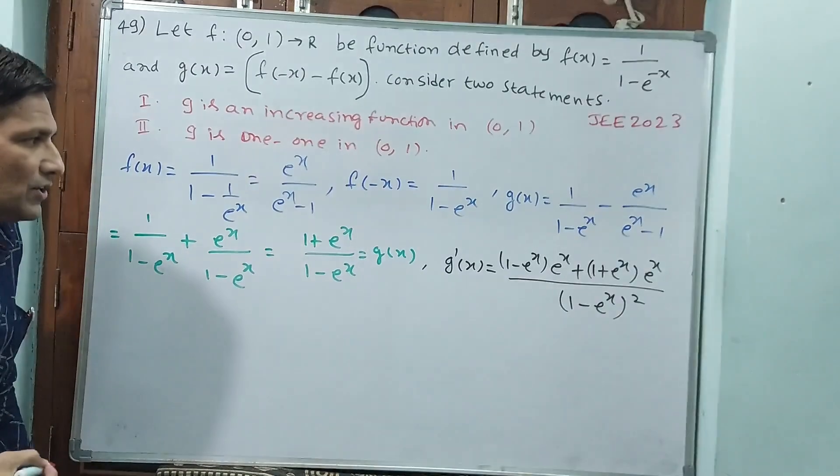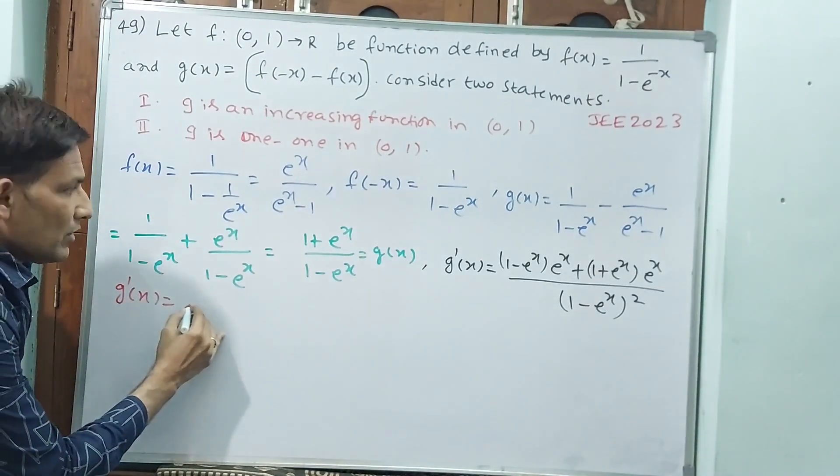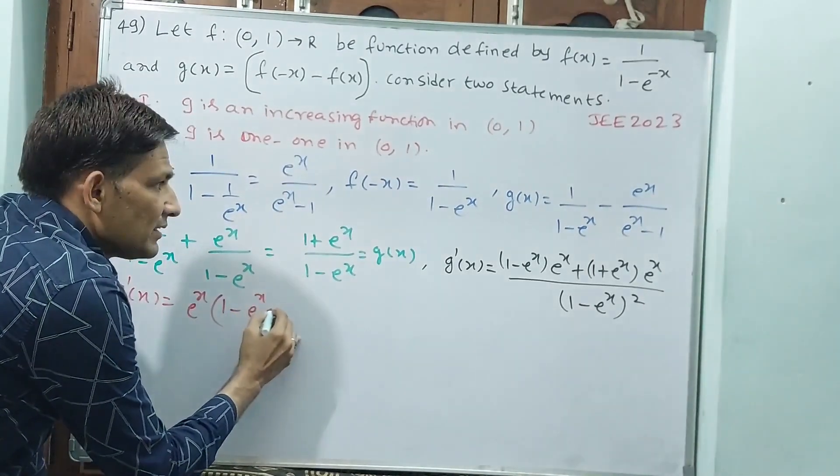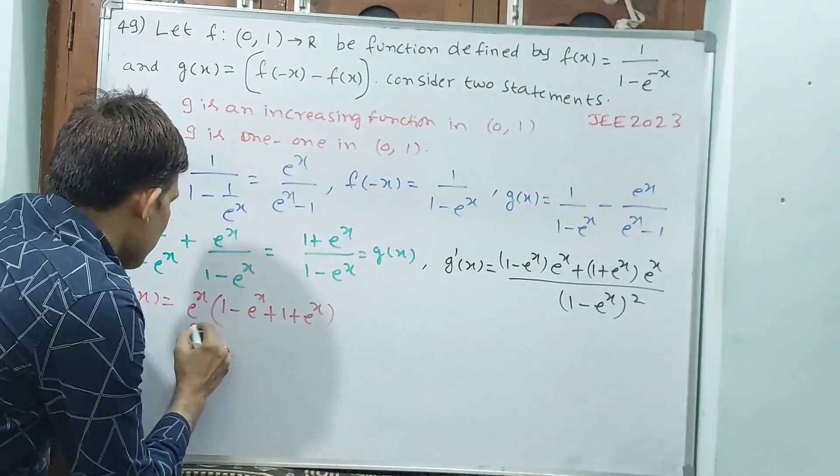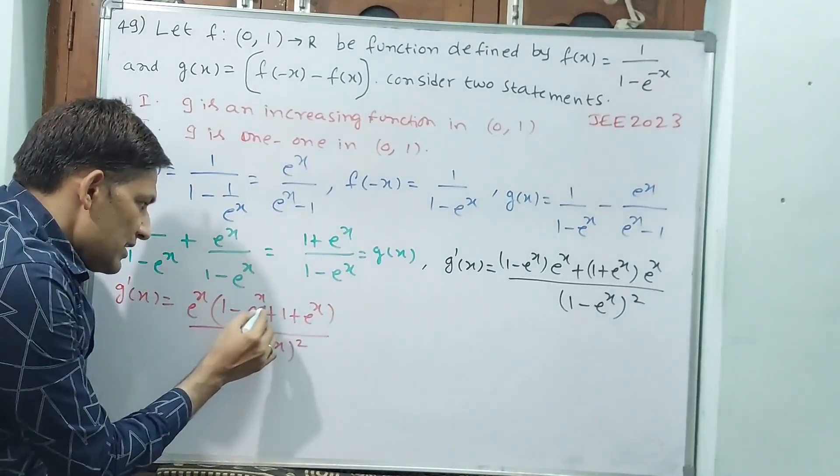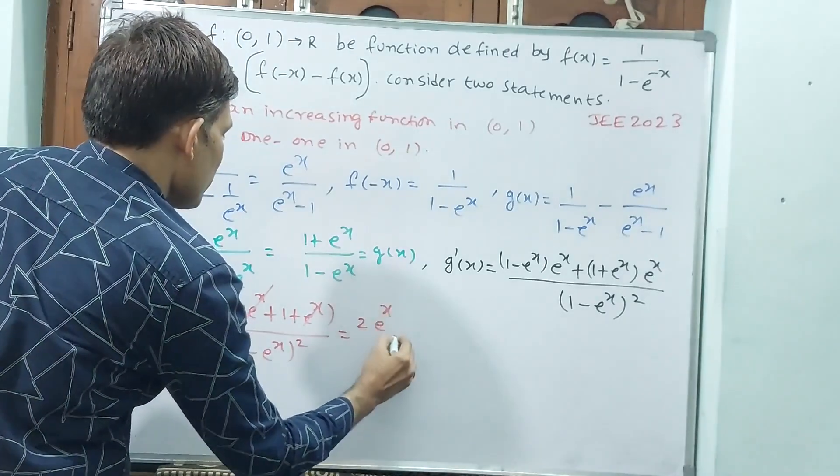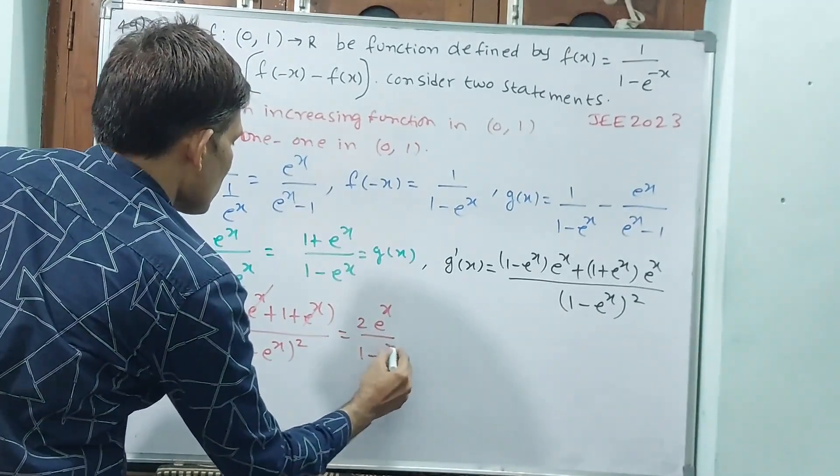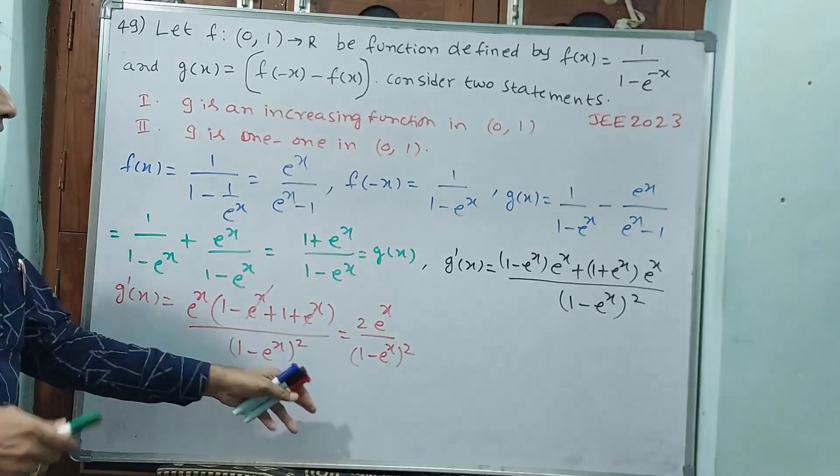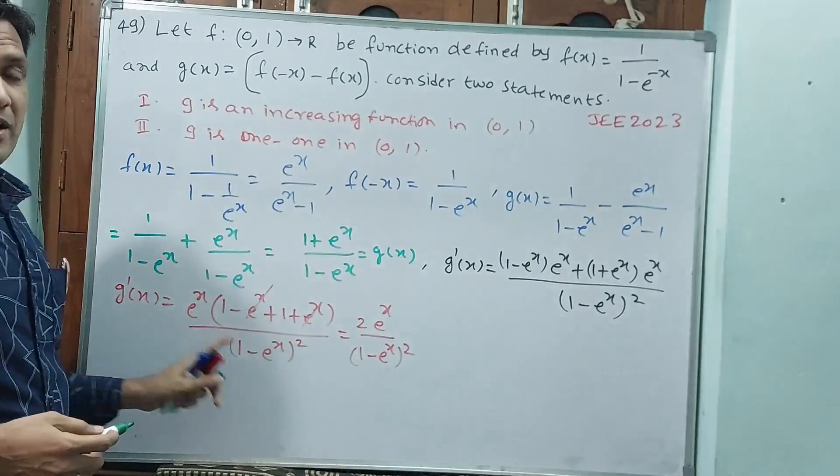Now make that. See, if I take e^x common, g'(x) = e^x[(1 - e^x) + (1 + e^x)]/(1 - e^x)^2. Here e^x, if I cancel, this is going to become 2e^x/(1 - e^x)^2. g'(x). See, g'(x), you have to submit 0 to 1. Then we can say whether this is increasing or not.